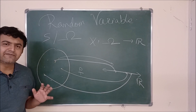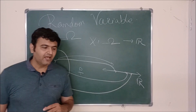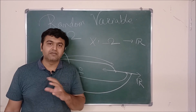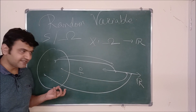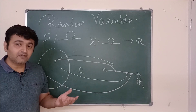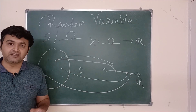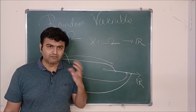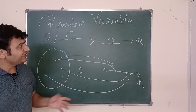You may ask: why the name 'random variable'? The word 'random' comes from random experiment — we do random experiments, we have all possible random events, and we are assigning numbers to those random events. Another reason is that this function can take any random values, therefore the word 'random'.